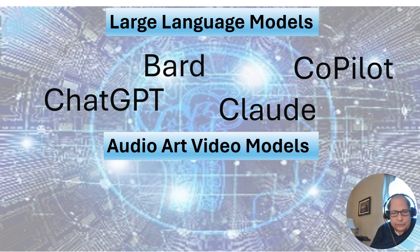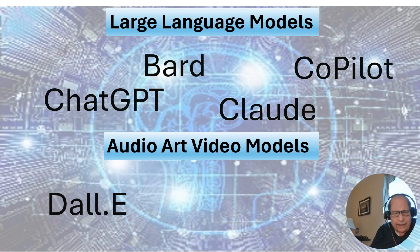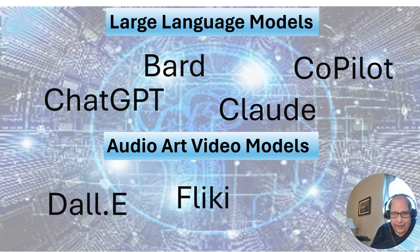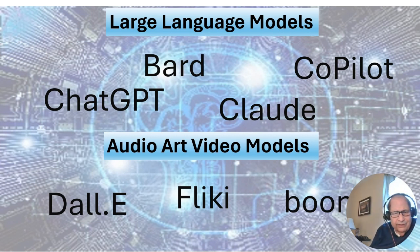There are also other types of AI beyond large language models — there's audio, art, and video. DALL-E is pretty clever; you can ask it to draw pictures for you. I asked it to make a picture of Godzilla eating a school, and it did. Flicky is an example of video AI, and Bumi is an example of audio AI. These are all examples of artificial intelligence.